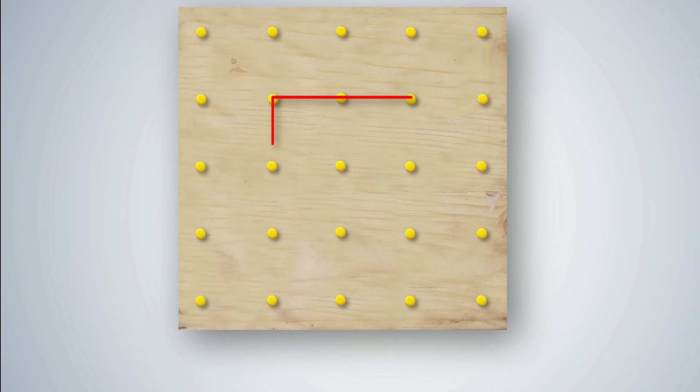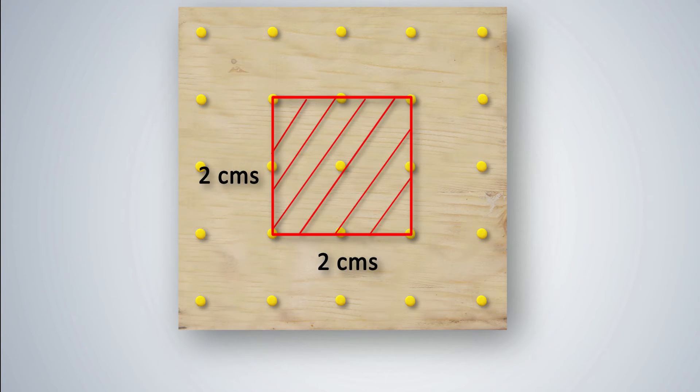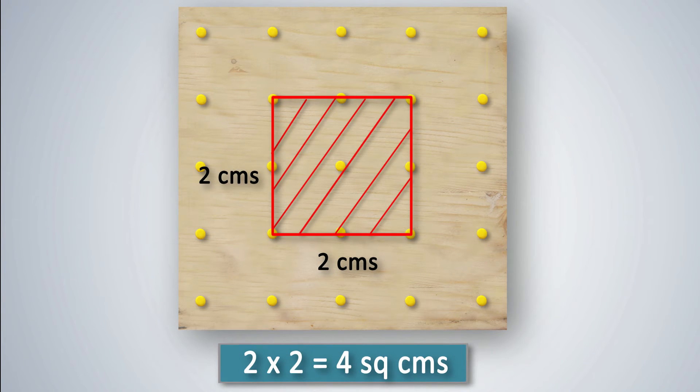What is the area of a square whose side is 2 centimeters? Length multiplied by breadth is 2 centimeters multiplied by 2 centimeters which is 4 square centimeters. So, the area is 4 square centimeters. Let students work out the area for other rectangles and squares where length and breadth are given.